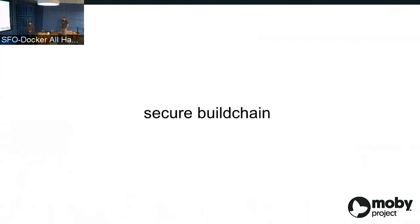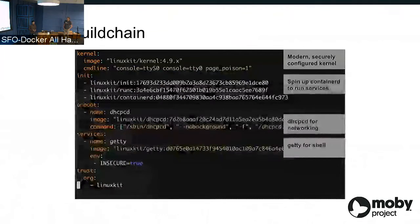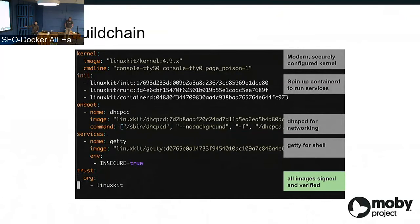Another facet we've been focused on is a secure build chain for all these components. As Rolf and Justin mentioned this morning, we've been leveraging multi-stage builds to have super lean package images. The actual binaries we build with ASLR and make them position-independent executables. One extra part of this YAML file is the trust section - we can either per org or per image pull in and verify Notary signatures over our packages. In this example, every image in the LinuxKit hub org is signed by maintainers and verified before being included in your base OS.